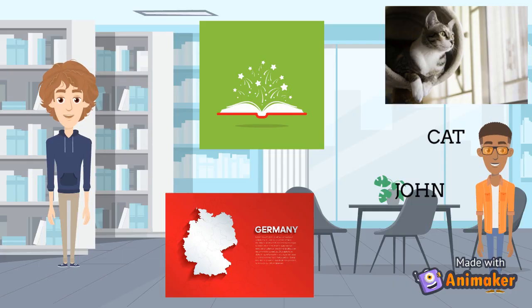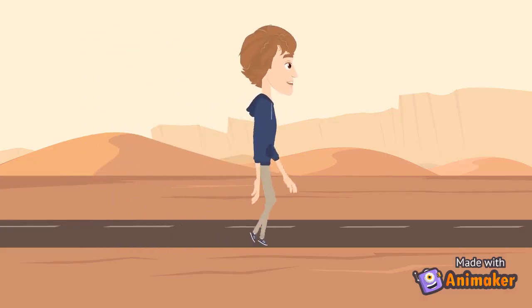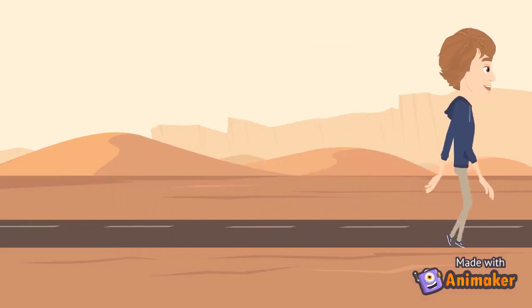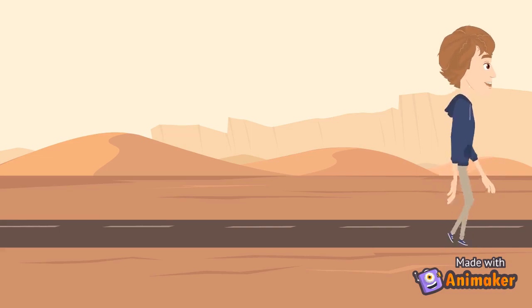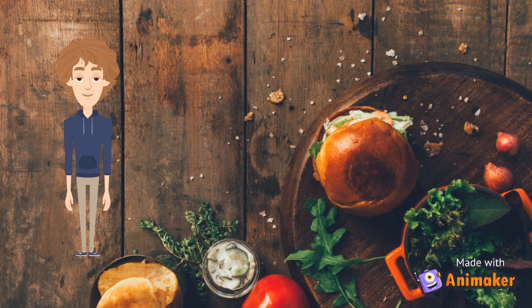Look at example number one very carefully. There are four nouns that I have mentioned: cat, John, Germany and book. Look at the picture very carefully and tell me how many nouns there are in this picture. Can you guess how many nouns are there? If you know the answer, write it in the comment box.